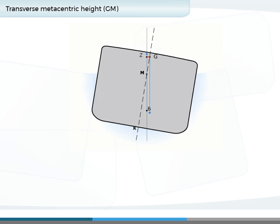If G moves above M, it will introduce a turning moment to incline the vessel and cause an initial negative metacentric height. This will result in an initial negative stability.